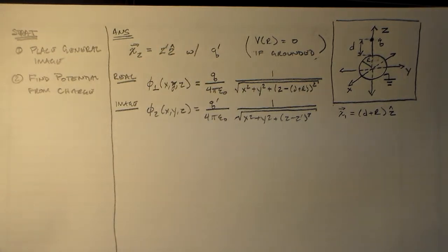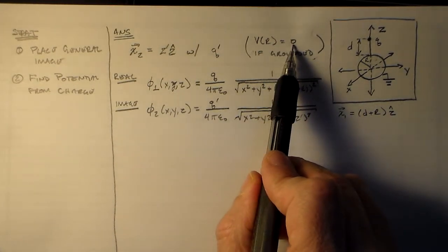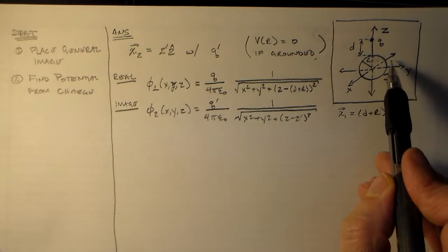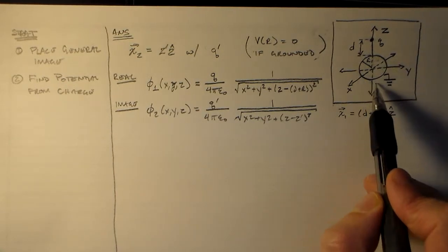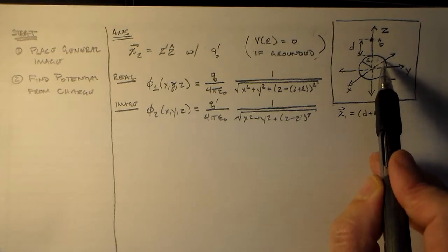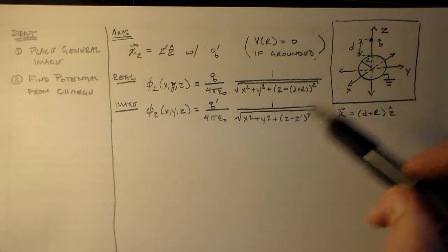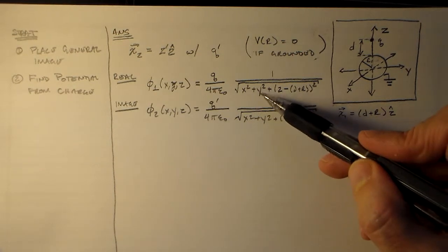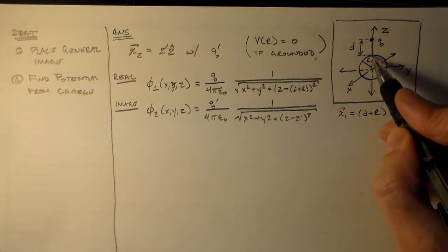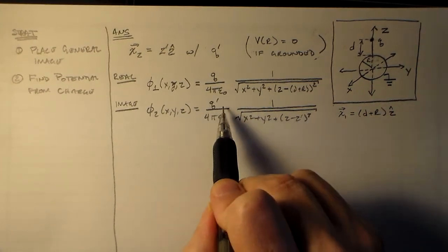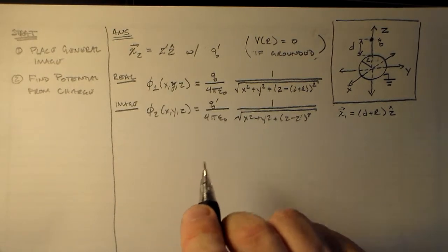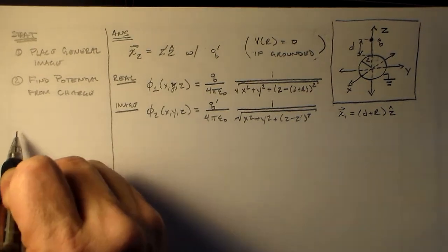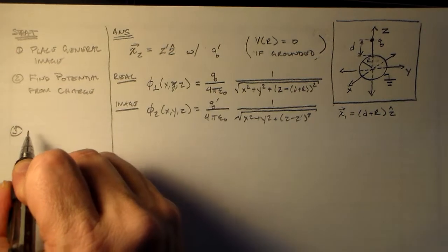So for my image, I have something similar going on. So I have my phi 2 of x, y, z. These are the same points. I have my q prime over 4 pi epsilon naught. Still, I've also said it's also on the z-axis. Just by symmetry, it has to be on the z-axis. So we have x squared plus y squared plus z minus z prime squared.